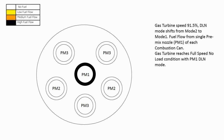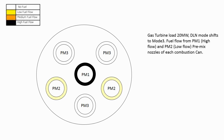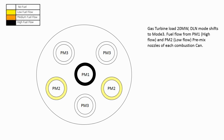Gas turbine reaches full speed no load with PM1 DLN mode. When 7FA gas turbine load reaches 20 megawatt, DLN mode shifts from mode 1 to mode 3. Fuel flows from PM1 and PM2 of each combustion can. Note that more fuel flows from PM1 while from PM2 fuel flow is low.